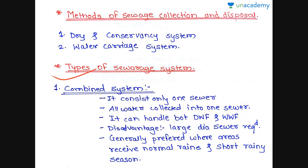The first type of sewerage system is the combined system. It consists of only one sewer which carries all the wastewater — it can handle both dry weather flow and wet weather flow, meaning both storm water and wastewater from residential or industrial areas. Because it handles both, a large diameter pipe is required, which is one disadvantage.